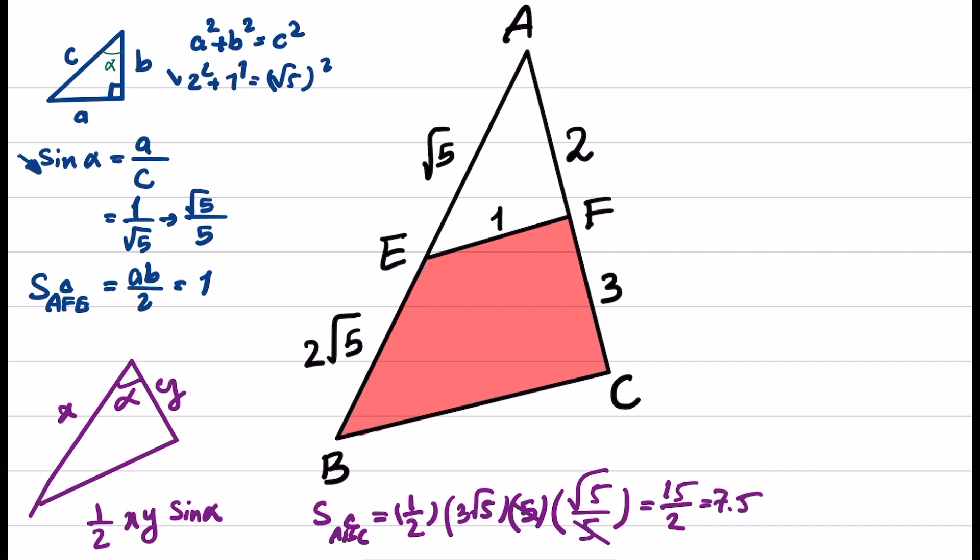Now we have the area of triangle ABC, and if we subtract the area of the upper triangle, we have the area of this region. To obtain the final answer, area of EFCB equals area of ABC minus area of AFE, and we know that this is 7.5 minus 1, equals 6.5.